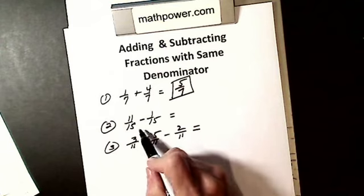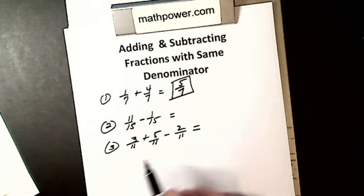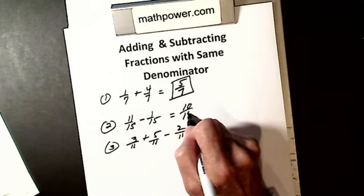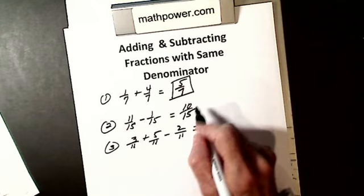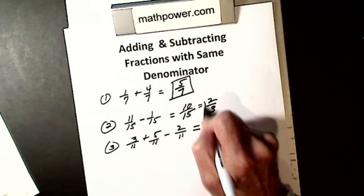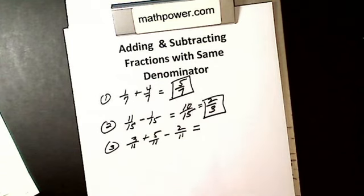I can subtract 11 fifteenths minus one fifteenth will give me ten fifteenths. But remember, all fractions have to be simplified. I can't leave ten fifteenths. I have to simplify it. So five into ten is two, five into fifteen is three, my answer is two thirds.